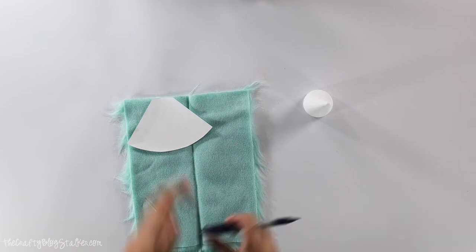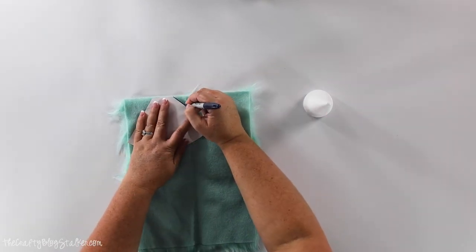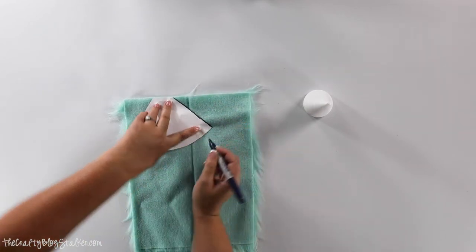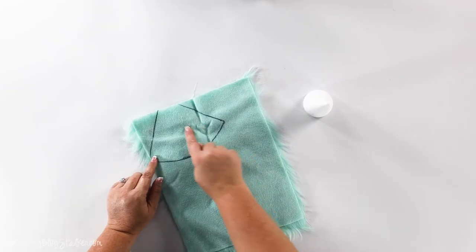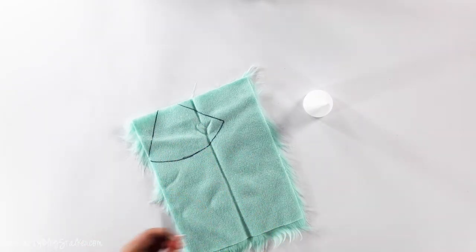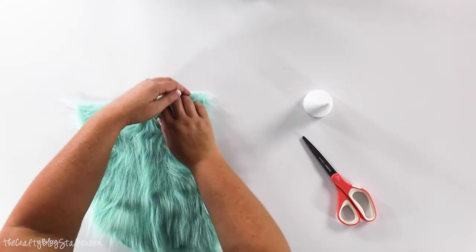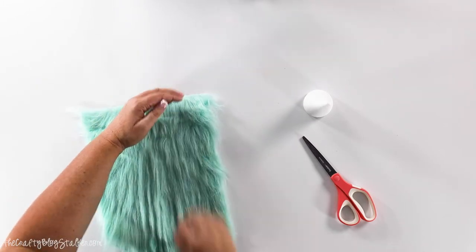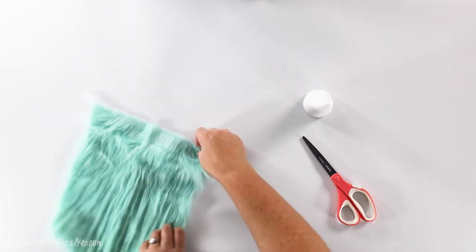And I'm going to take a sharpie. And I am just going to trace the little template that we made. We have our template traced on. So now we're going to take a pair of scissors and we're going to cut it. But before we cut it, we want to make sure that all of that hair from the faux fur is going down.